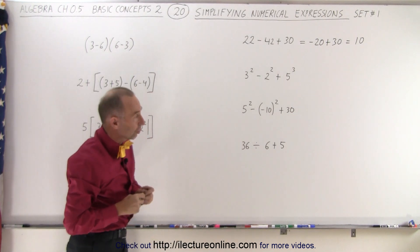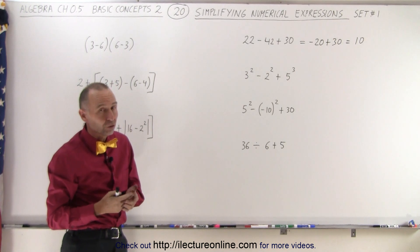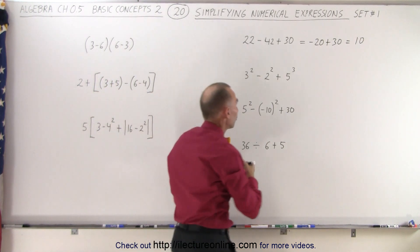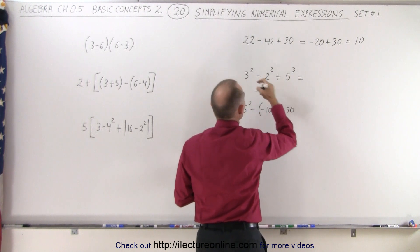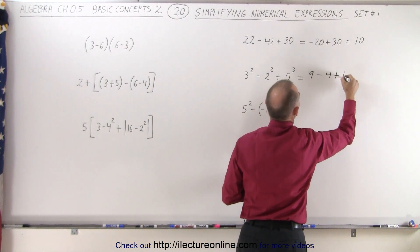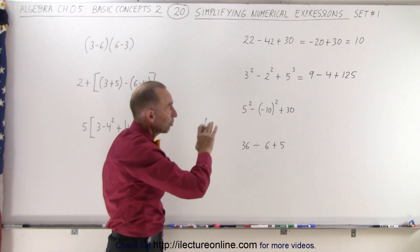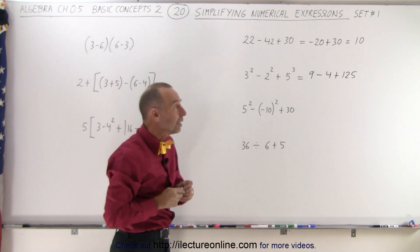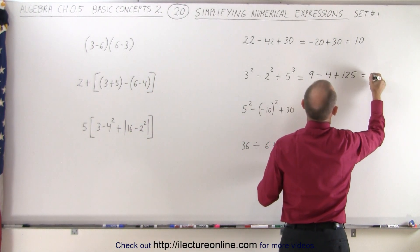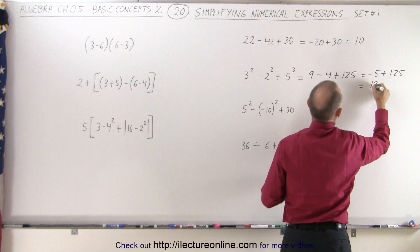On the next expression, we have exponents, a subtraction, and an addition. Exponents come before we do the addition and subtraction. So let's first apply all the exponents: 3 squared is 9, minus 2 squared which is 4, plus 5 cubed which is 125. Now we apply the rule where we start from left to right, because subtraction and addition have the same priority. So 9 minus 4 equals 5, plus 125 — that's equal to a positive 120.